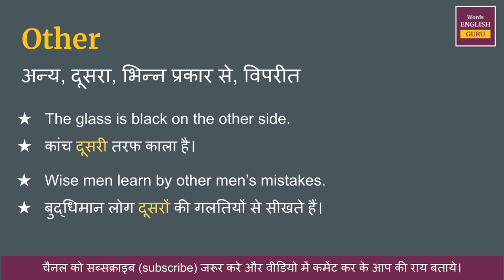आईए Other word को हम कुछ उदाहरण के माध्यम से और अच्छे से समझने का प्रयास करते हैं. हमारा पहला उदाहरण है — इसका हिंदी मतलब है: काँच दूसरी तरफ काला है. आईए दूसरा उदाहरण और देखते हैं.